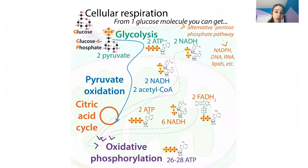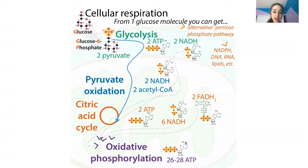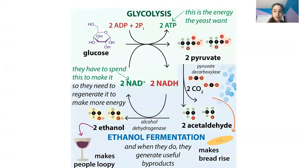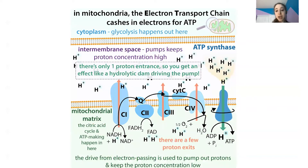Glycolysis breaks sugars down through multiple steps to give us pyruvate, which we then oxidize and put through the citric acid cycle, then oxidative phosphorylation to get a lot of ATP. Alternatives exist for other microbes — they still do glycolysis, but they do something different with the pyruvate. Cellular respiration is aerobic, requiring oxygen, because in the electron transport chain, oxygen accepts electrons.